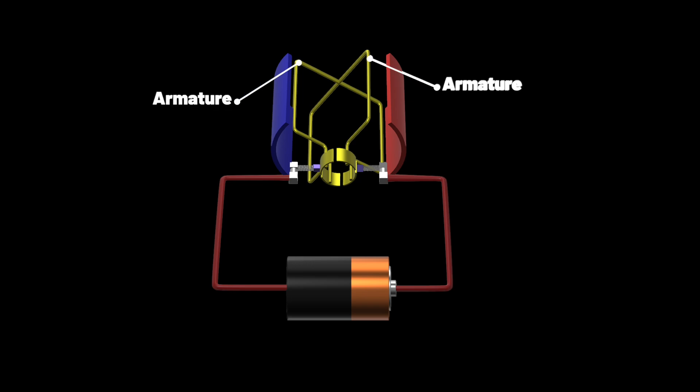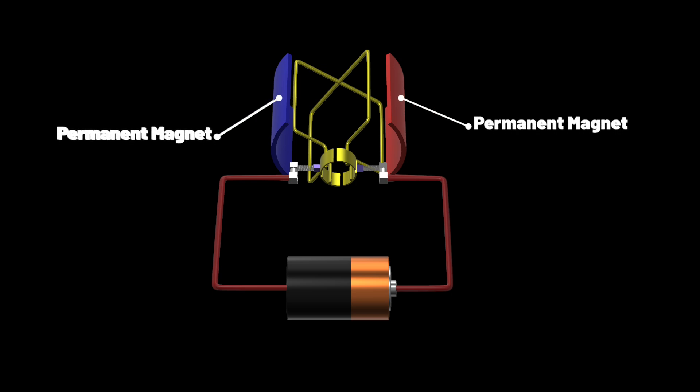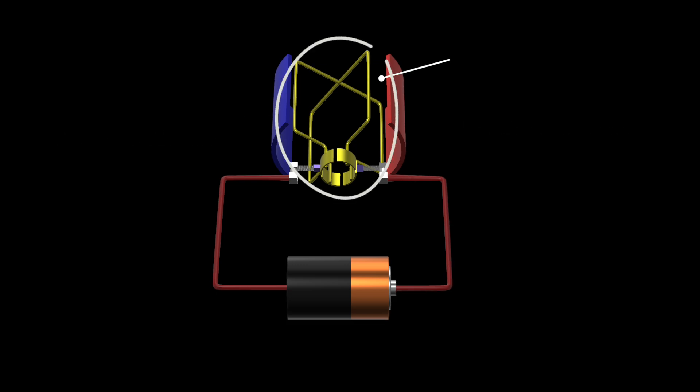The next part are the armatures. In real life, these will be copper windings, which will make them electromagnets. Then you have the permanent magnets, which are part of the stator. The stator is the part of a motor that is stationary. Notice the permanent magnets have opposite polarity. Then you have the rotor, which is technically anything that is rotating inside of the motor. So the commutator and armatures would be part of the rotor.